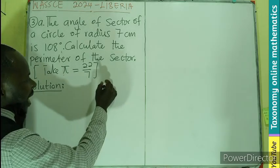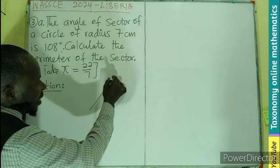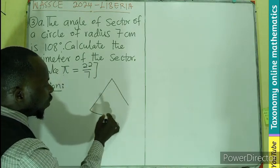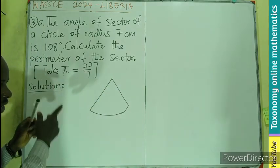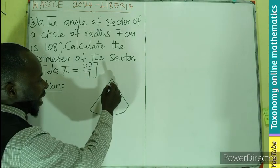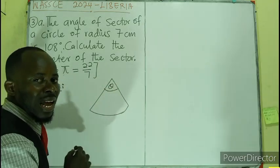First, we need to know what a sector is, then secondly, how do you find the perimeter of a sector? So this is a sector which will sustain an angle at the center.